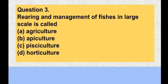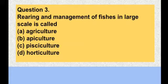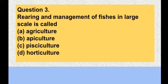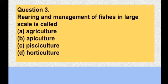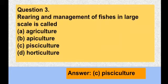Question number three: Rearing and management of fishes on a large scale is called — this is a very important question, frequently asked in competitive exams. Option A agriculture, option B apiculture, option C pisciculture, option D horticulture. Agriculture is the practice of farming; apiculture is rearing honey bees; horticulture is growing vegetables and ornamental flowers. Option C, pisciculture, is the correct answer.